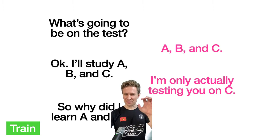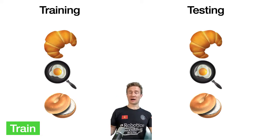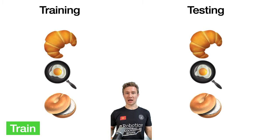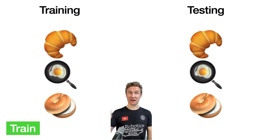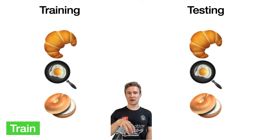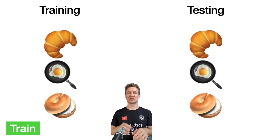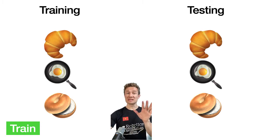This is a little abstract, so let's relate it to our meal problem. Let's say I'm training an algorithm and I tell it croissant, egg, bagel — and I test it with the exact same information: croissant, egg, and bagel. I get 100%. That by itself is not a robustly trained algorithm — I'm just asking it to spit back what I gave it. We want machine learning algorithms to be flexible. The testing data should be different from your training data.